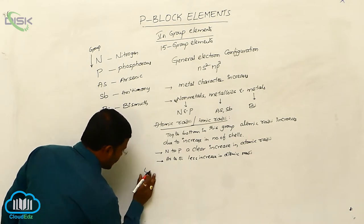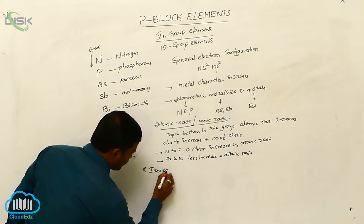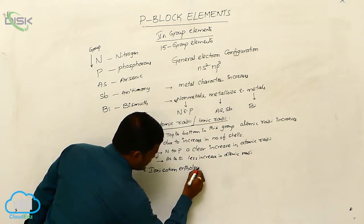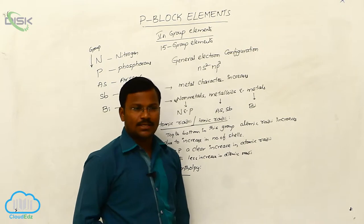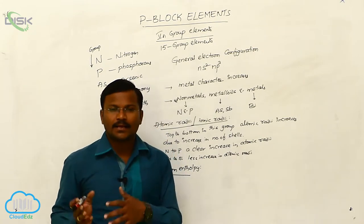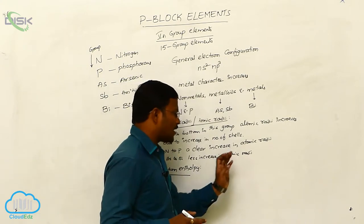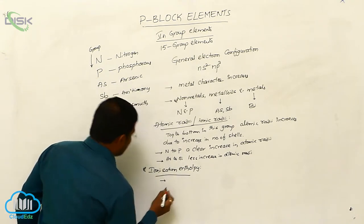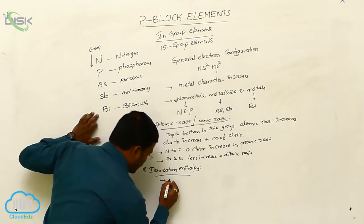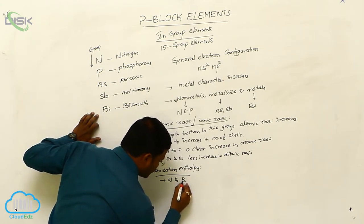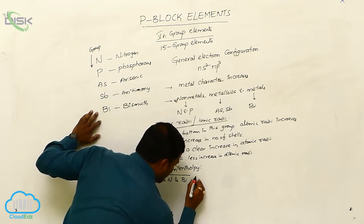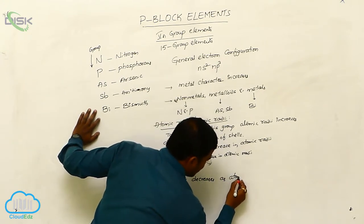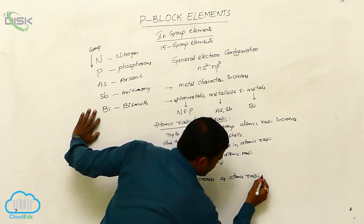The next topic for the same elements is ionization enthalpy. The amount of energy required to eliminate an electron from the valence orbit of any atom is called ionization enthalpy. Generally, ionization enthalpy from top to bottom — that means from nitrogen to bismuth — decreases as atomic radii increases.